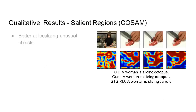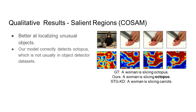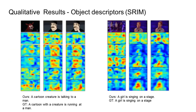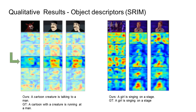Our model is better at localizing things that object detectors usually don't have in their dataset. Here, our model is able to attend to a tail distribution object such as an octopus. Some more results are shown here. The visualizations from the object association module show that object detectors don't work well with animation datasets, but here we can see that one of the channels gets activated on the eyes and mouth of a cartoon character.